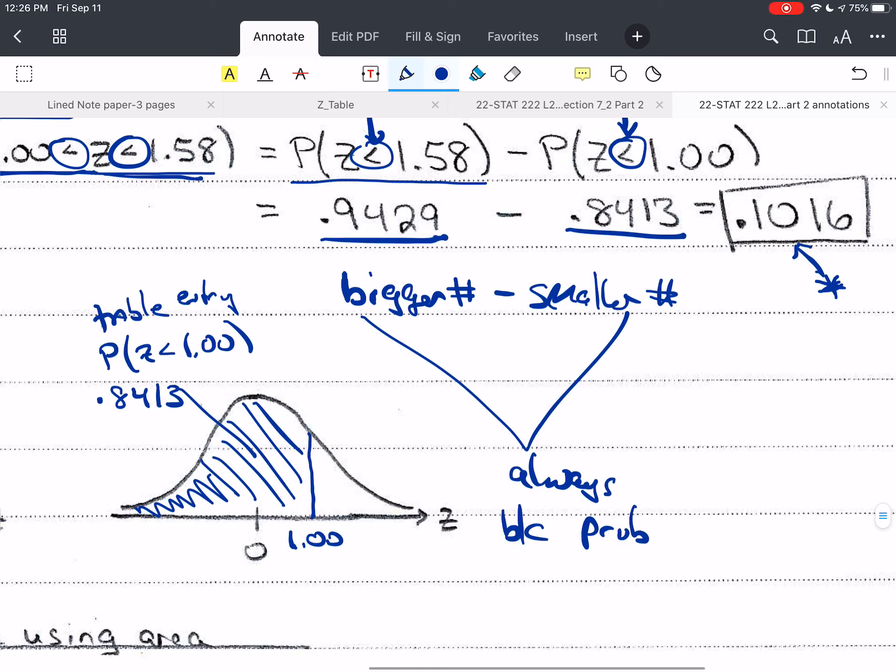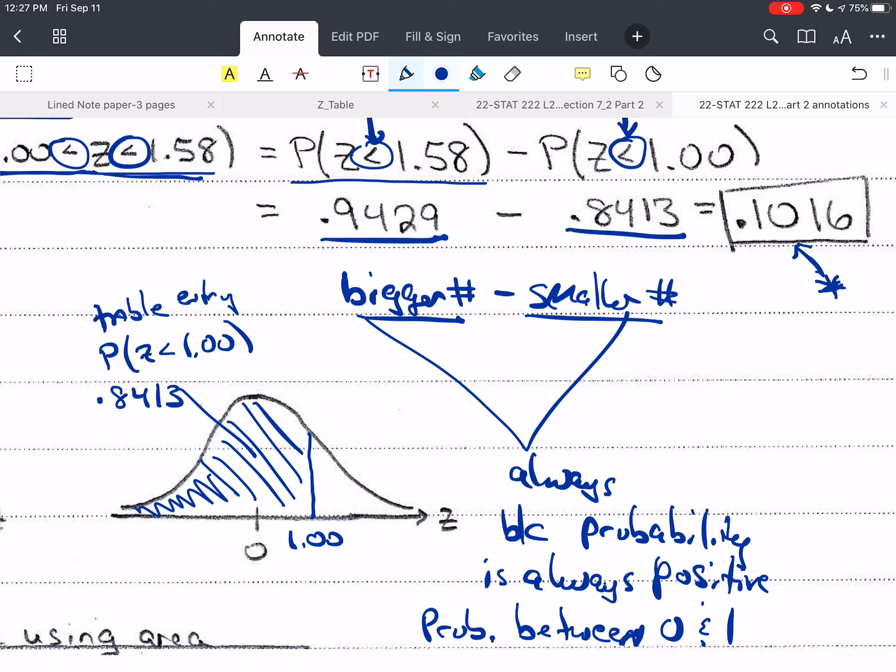Because probability is always positive. If you put down a negative value for probability, you won't get any partial credit whatsoever, because you're telling me that you don't understand probability, because probability is between 0 and 1. Only. It's never negative, and it's never greater than 1. So I should never get an answer from you for probability that's less than 0 or greater than 1. So no negative probabilities, and no probabilities greater than 1. If you've got a negative, you've probably reversed which one was supposed to be here and which one was supposed to be here. It's always the bigger minus the smaller.